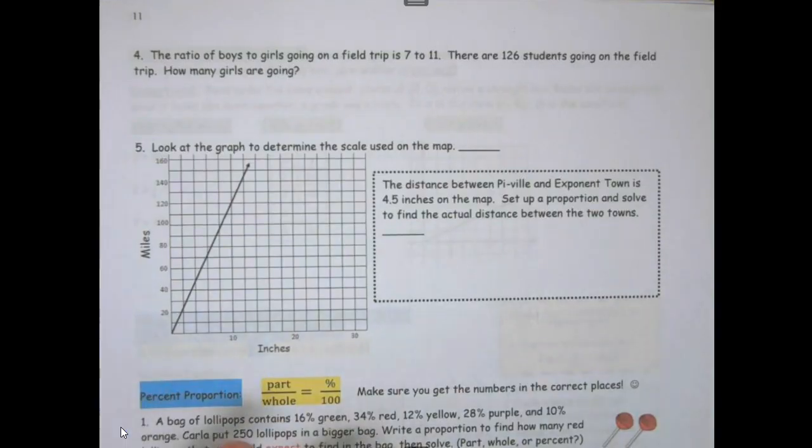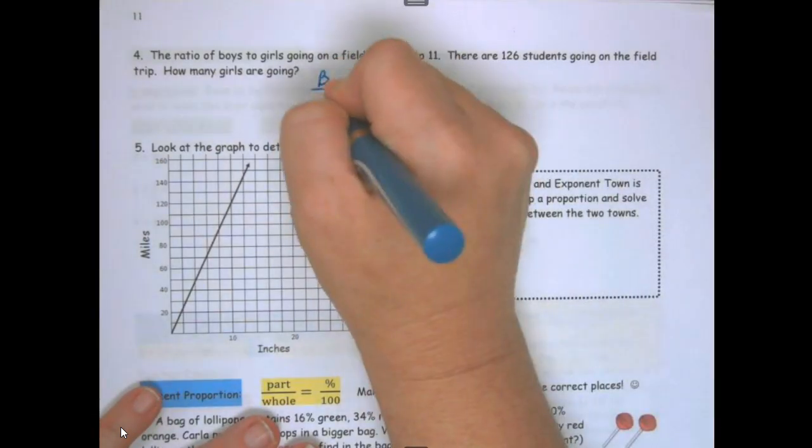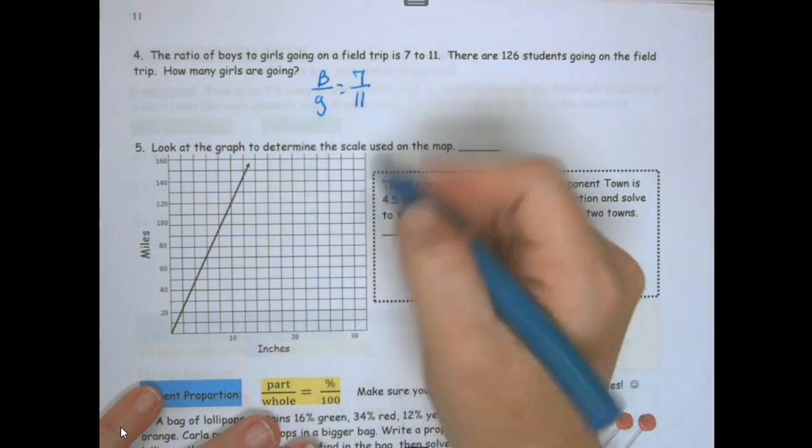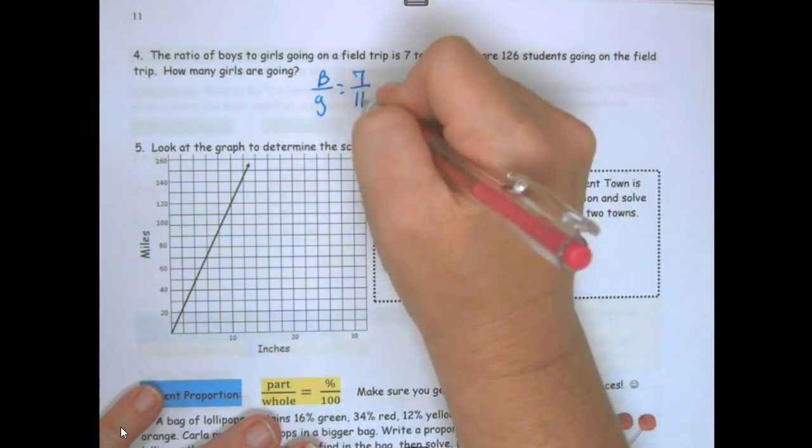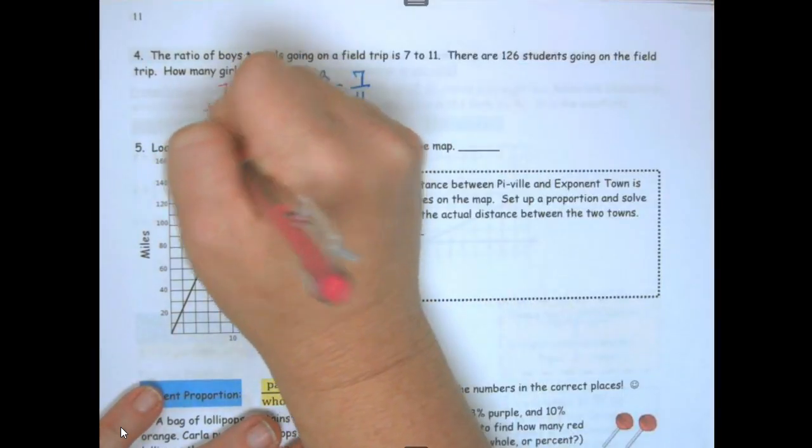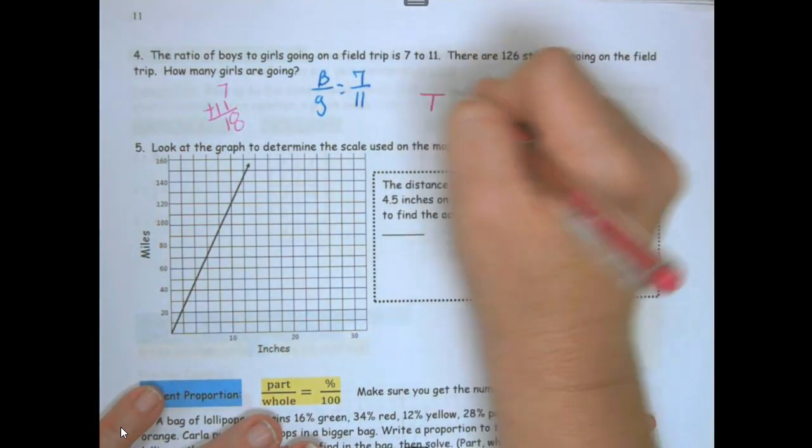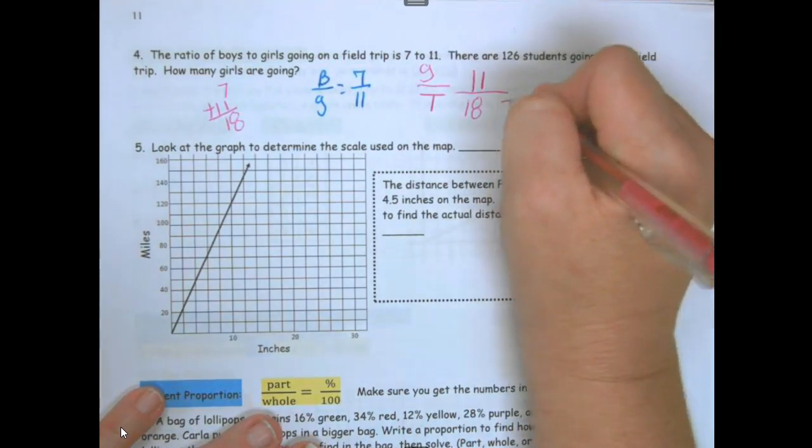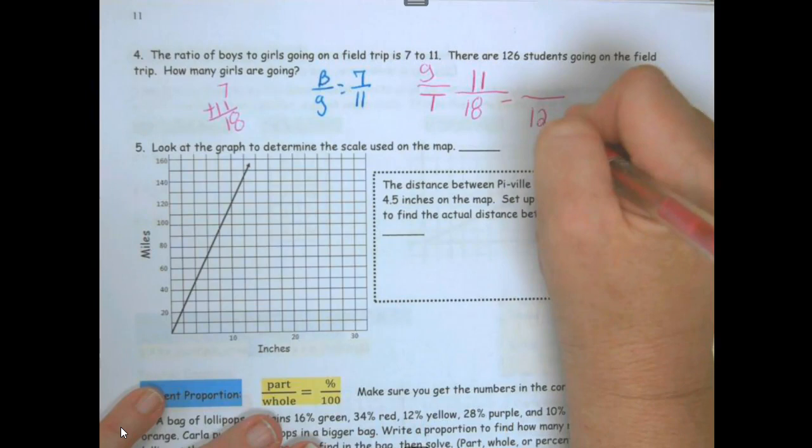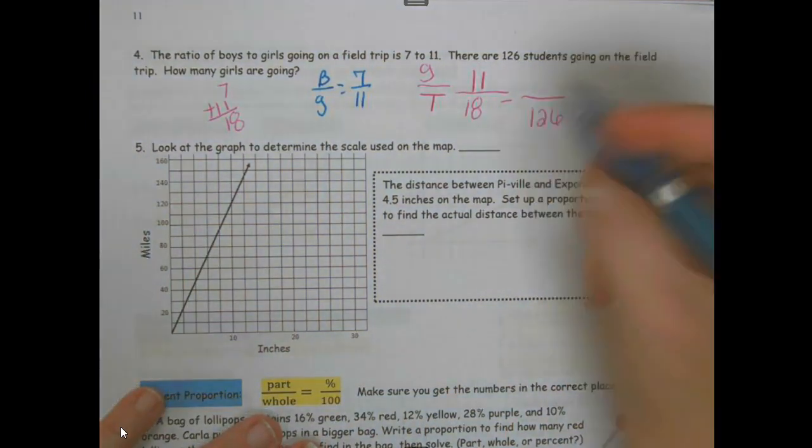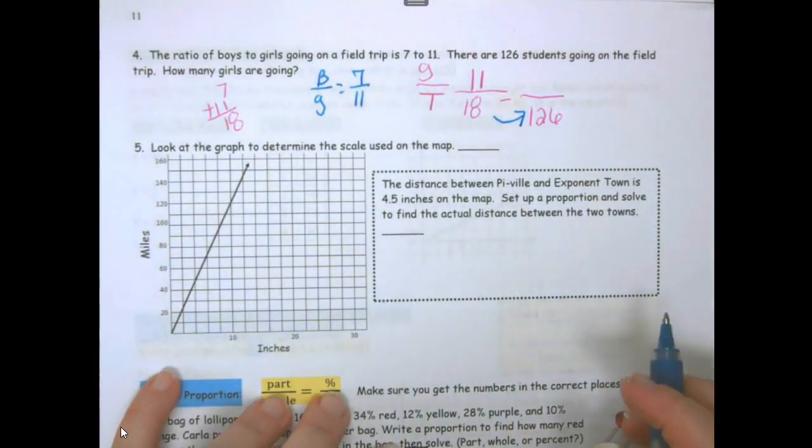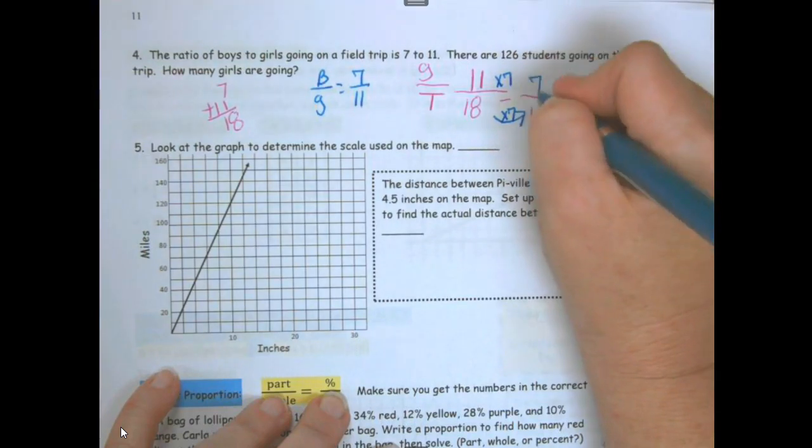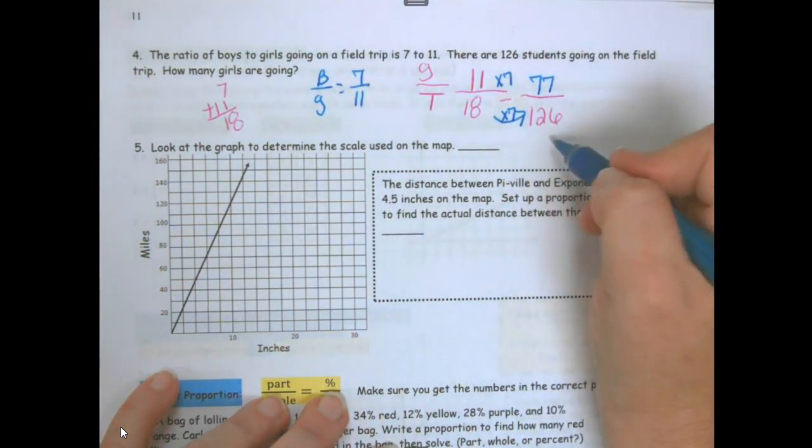The ratio of boys to girls on the field trip is 7 to 11. There are 126 students going on the field trip. How many are girls? We have to first add these together. 7 plus 11 is 18. So that's 18 total students. How many of them are girls? 11 of them are girls. So now I want to know how much is 126. So 18 times 7 is 126. 11 times 7 is 77. So there is a total of 77 girls going on the field trip.